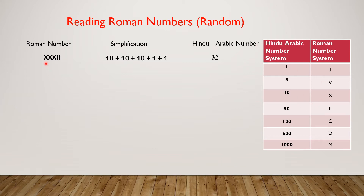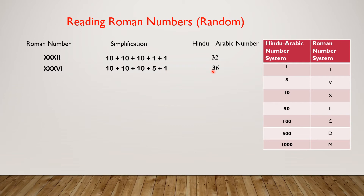Roman number XXXII: simplification 10 plus 10 plus 10 plus 1 plus 1, Hindu-Arabic number 32. XXXVI: simplification 10 plus 10 plus 10 plus 5 plus 1, Hindu-Arabic number 36.